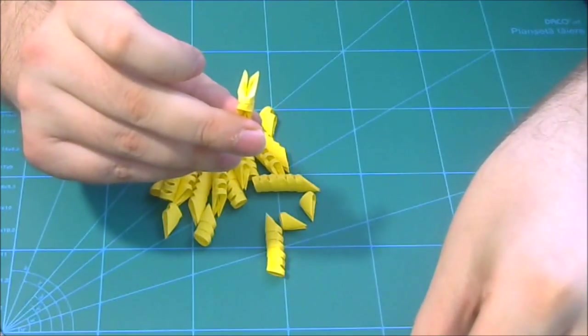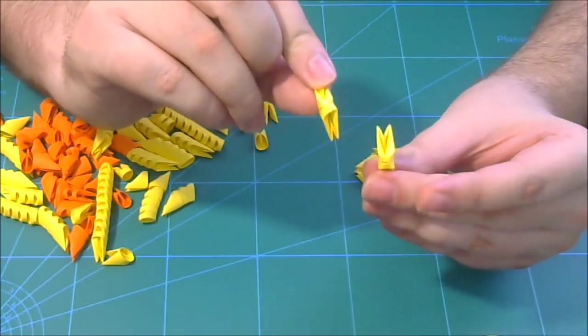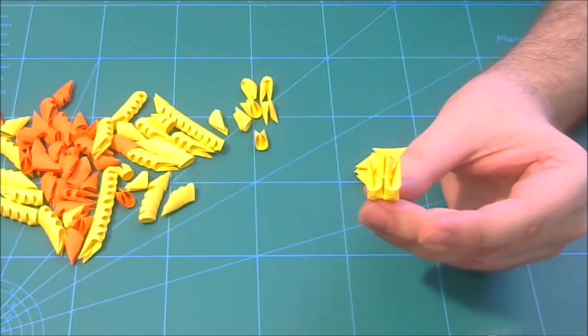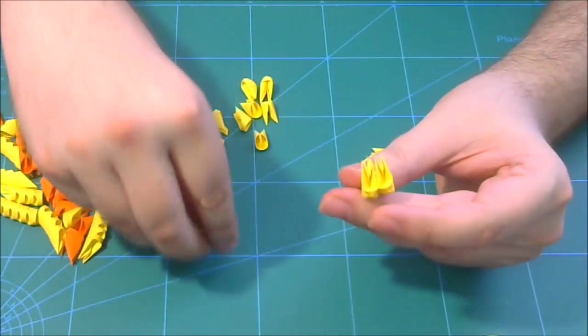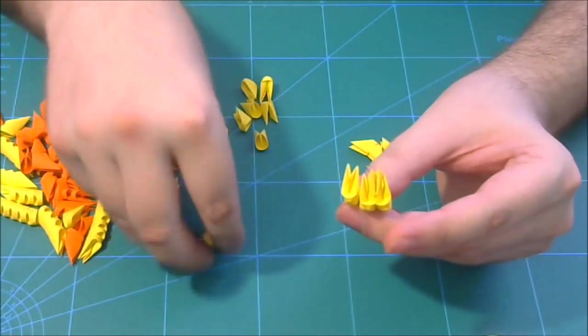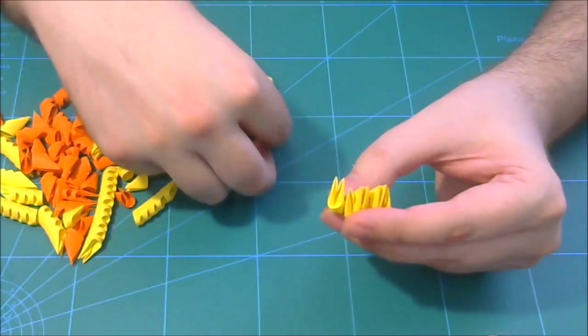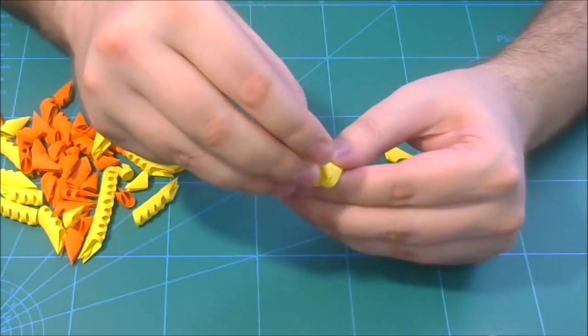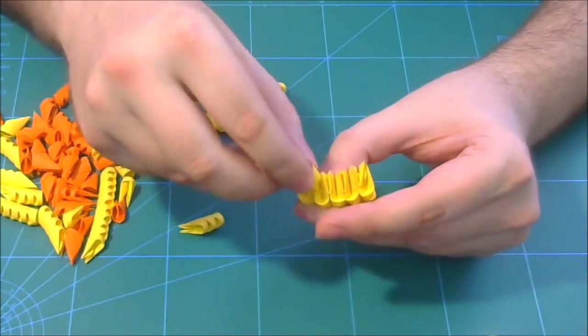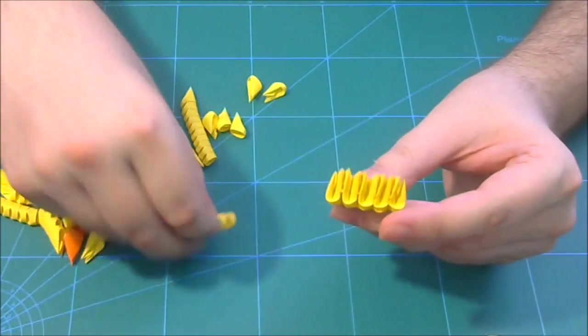Next we take two pieces like this and we connect one inverted here. We glue very well, then in the other part. This way we connect all these parts, three pieces like this.